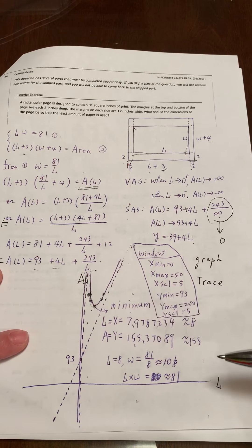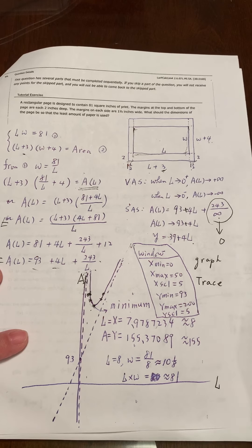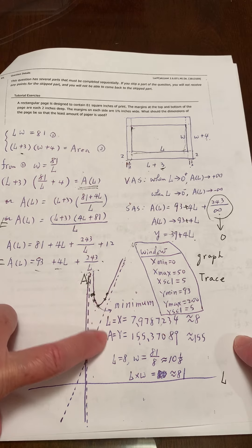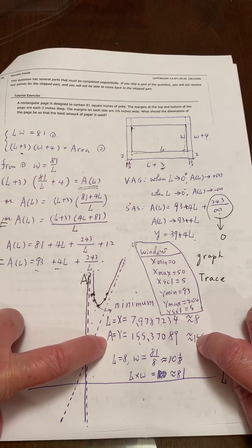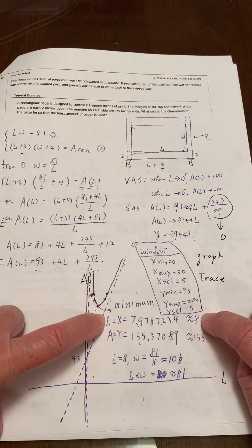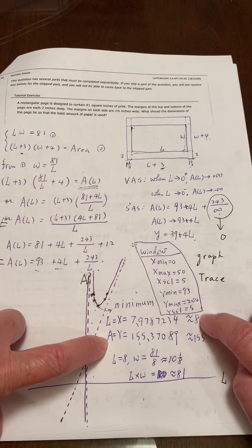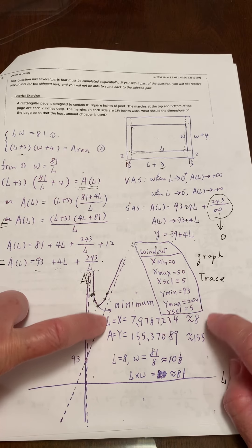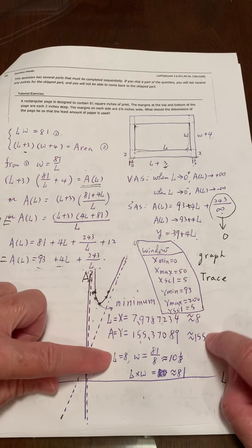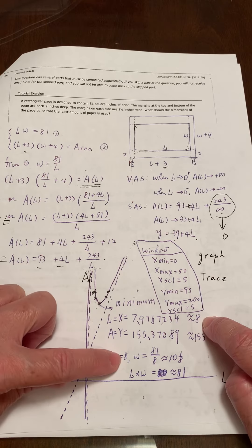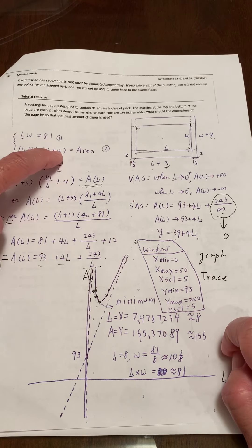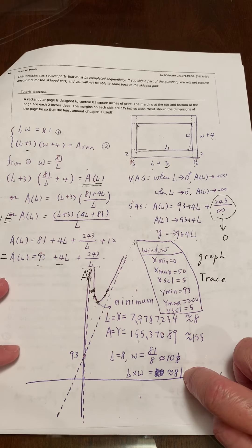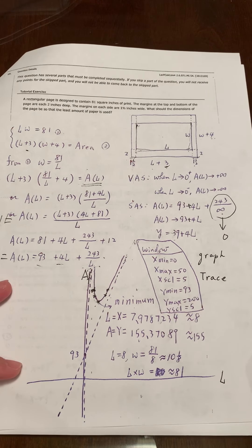After you find the minimum value, the calculator will show you when you are going to have minimum value, so which error will provide the minimum area. They'll give you these two numbers l and a, or in your calculator it will say x and y. When l equals 8, you can plug in here: 81 divided by 8 is about 10 and 1/8.